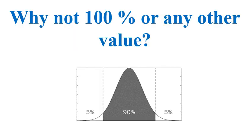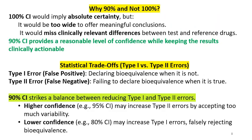You might be asking: why is it not 100%? Or why not 95%, 99%, or 98%? Why is it 90% only? If a 100% CI were used, it would imply absolute certainty but would be too wide to offer meaningful conclusions, and it would miss clinically relevant differences between the test and reference drugs. 90% CI provides a reasonable level of confidence while keeping the results clinically actionable. There are also statistical trade-offs involving type 1 and type 2 errors — type 1 error is a false positive.